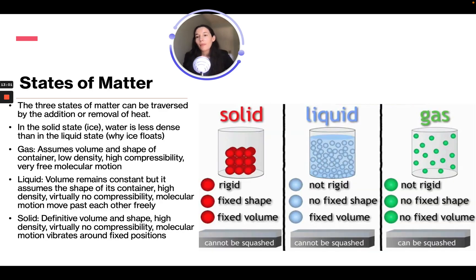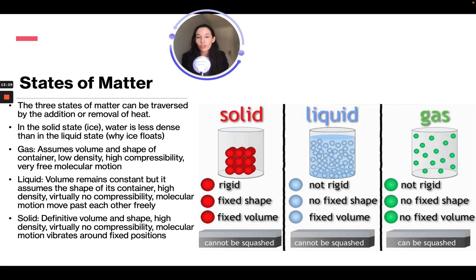The three states of matter can be traversed by the addition or removal of heat. In the solid state, ice is less dense than liquid water, which is why ice floats. Gas assumes the volume and shape of its container — low density, high compressibility, and very free molecular motion. Liquid retains a constant volume but assumes the shape of its container — high density, virtually no compressibility, with molecules moving past each other freely.